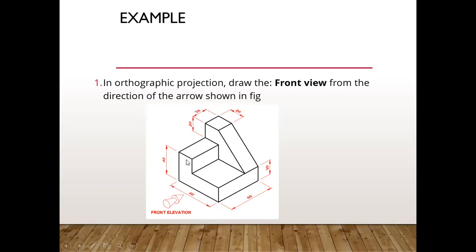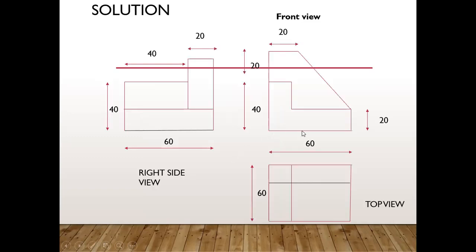Let us understand from the 3D object. Nearly two portions are visible to the observer's eye: side 1 and side 2. We want to draw these two sides by drawing a continuous line in 2D view. Along with the dimension scale values, we have to follow the dimension scale. First, draw a line of length 60mm in the horizontal direction, then draw a vertical line for 20mm.